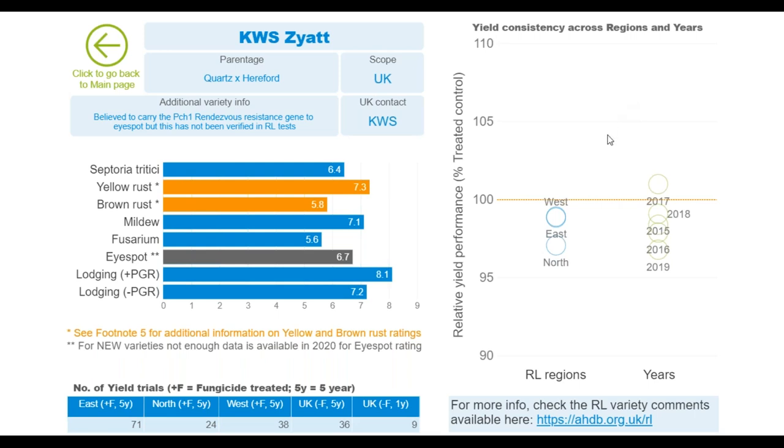What I have listed here is the parentage for that variety, the scope of recommendation, the UK contact - that's the breeder for that variety in the UK. Some additional variety information, if it's available, not necessarily present for every variety, then we've got the ratings here. Some information about how many yield trials that variety has been grown in over the last five years or in the last year. Here, for example, we see that it's been grown in trials that did receive fungicide in 71. For the north, that's 24. For the west, that's 38.